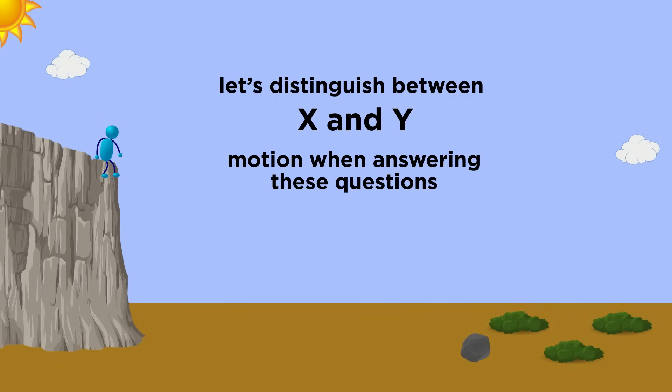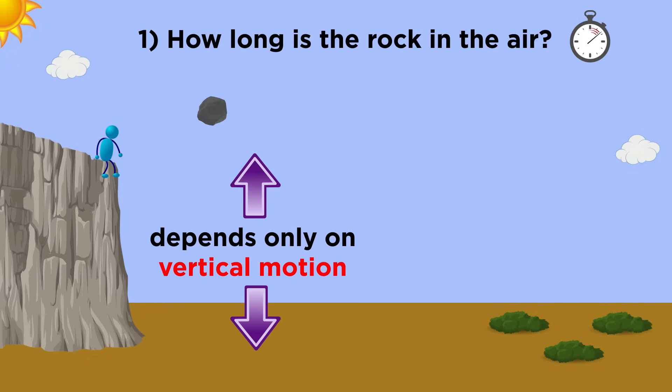First things first, let's make sure we understand how these questions relate to motion in both the x and y direction. The time it spends in the air only relates to y-direction behavior, because it will stop being in the air when it hits the ground. No matter what the horizontal velocity is, from zero to some huge number, the vertical motion will be independent of that.